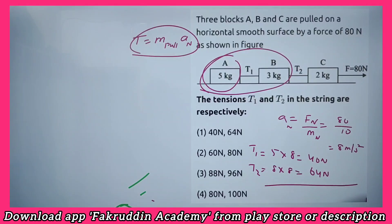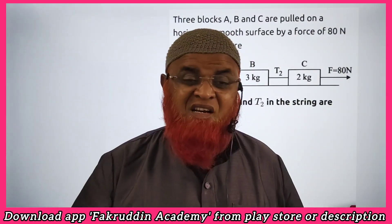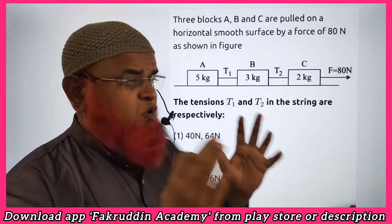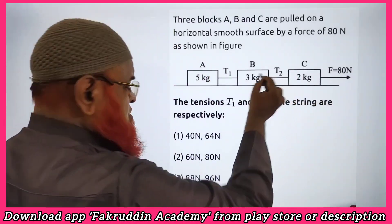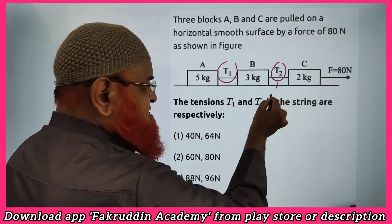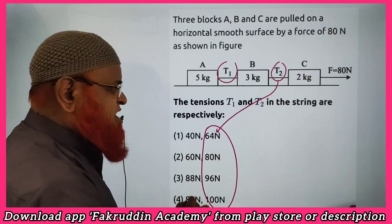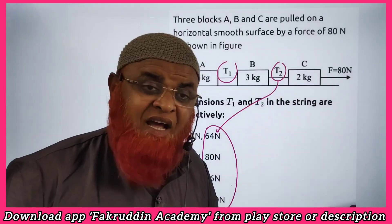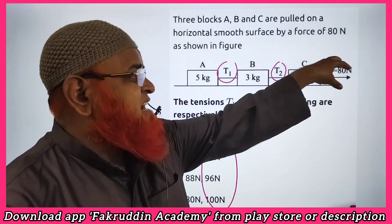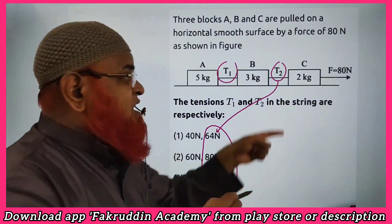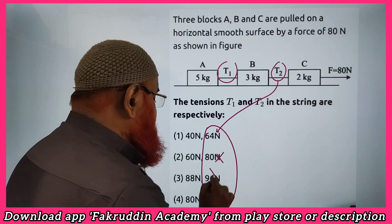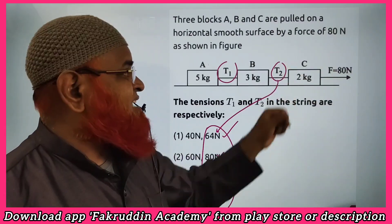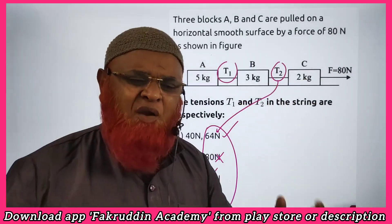How can you solve this problem without even taking a pen and paper? By just using your observation you can solve this problem. He has taken 3 blocks and a force of 80 N is pulling them. He is asking us to find out the tensions. You can see that in all the options given, there is only one tension less than 80 N. Applied force is 80 N — how can the tension be greater than or equal to 80? So those 3 options are not correct. Only the option with 64 N is correct, because tension should be less than the applied force. Have you done this problem without even solving it? Thank you very much.